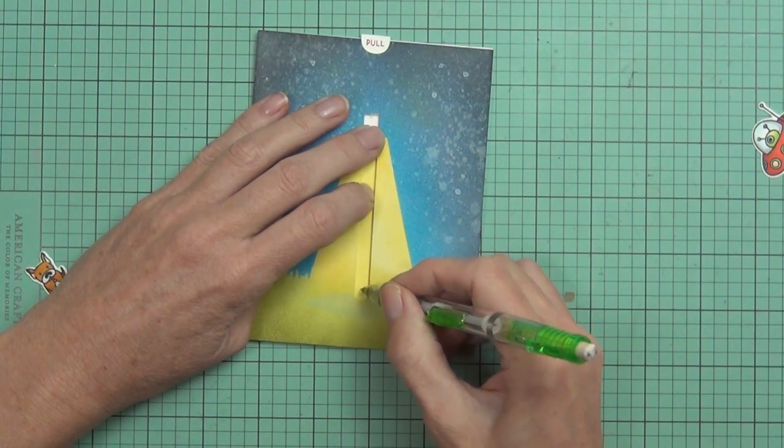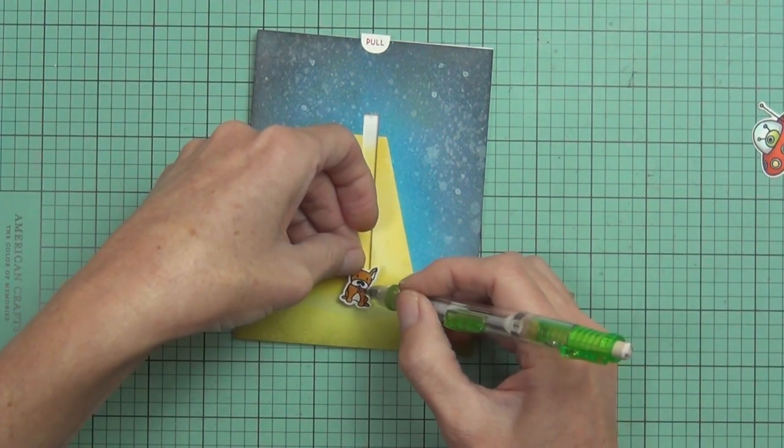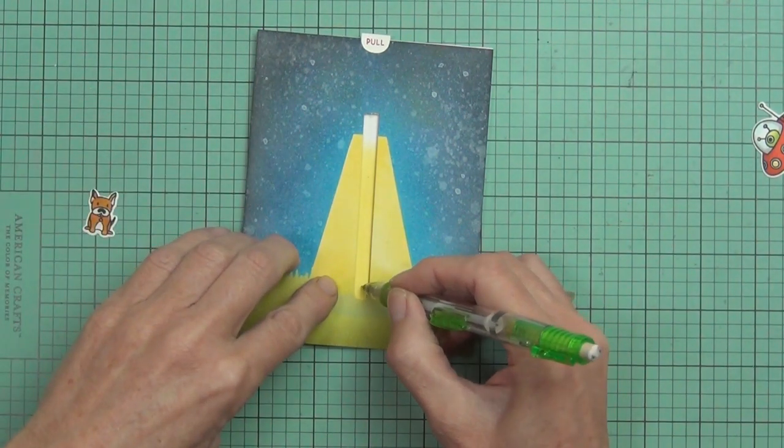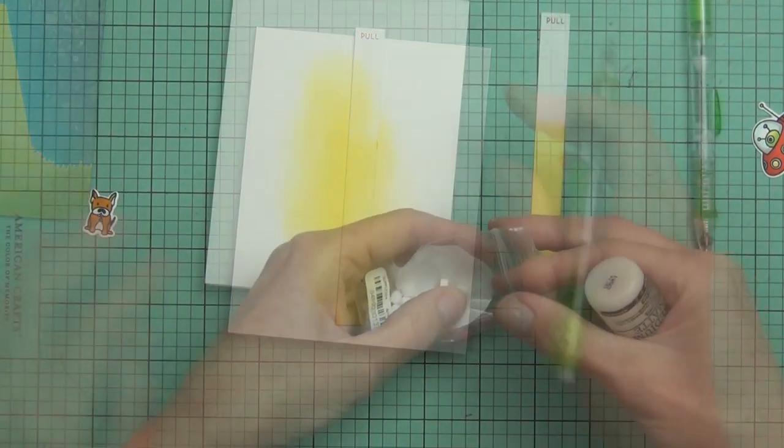I've held everything in place and just making a mark on the pull tab itself to know where to add my image, which is going to be at the bottom of that channel.